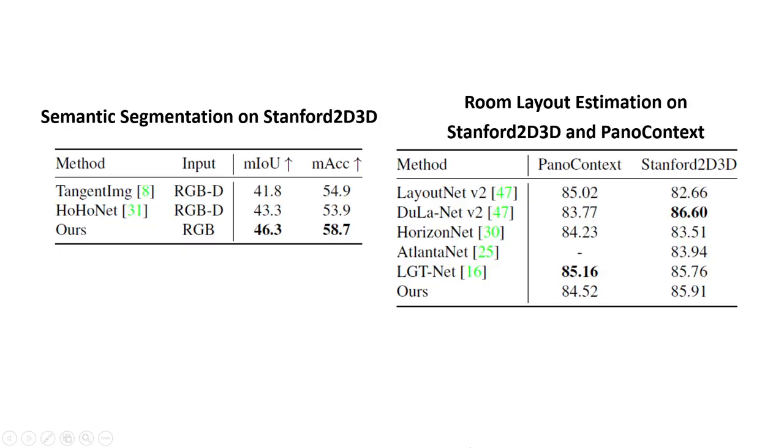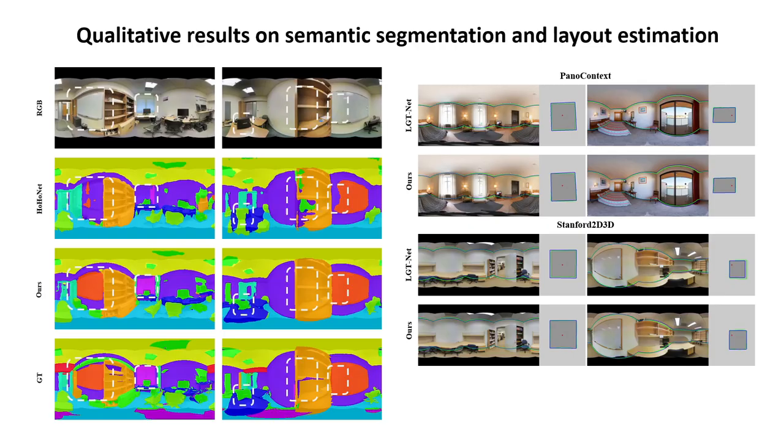On 360 semantic segmentation, PanelNet outperforms previous method with only RGB panoramas as input. On room layout estimation, we follow the room layout representation of LGTNet. Since the original PanelNet structure is designed for dense prediction, we add linear layers at the end of the decoder to predict a 1D horizontal depth and the room height. The modified PanelNet also shows competitive results on this task.